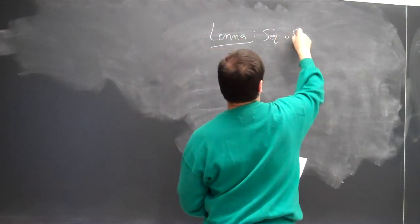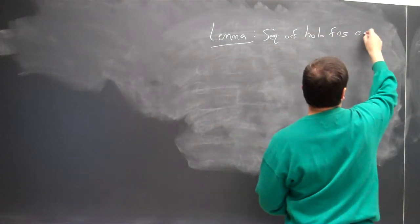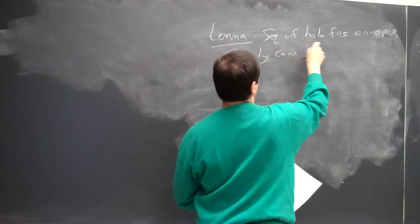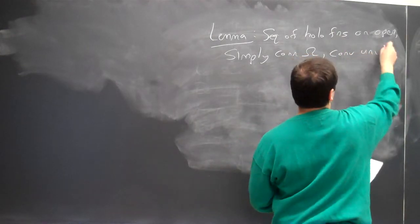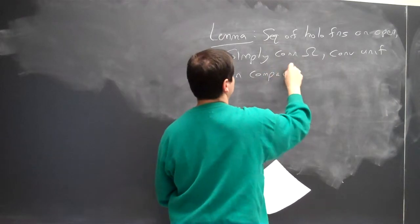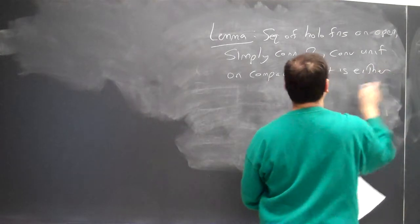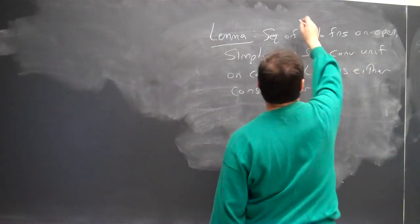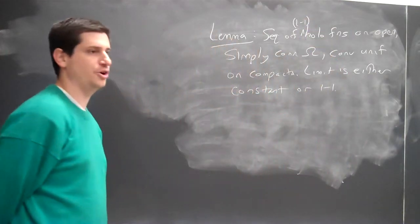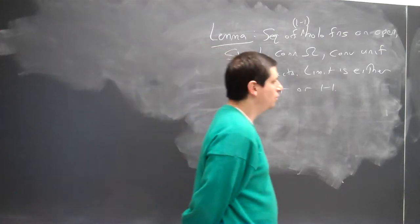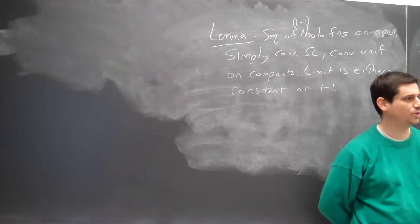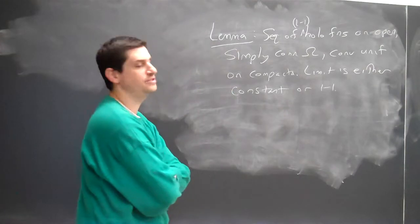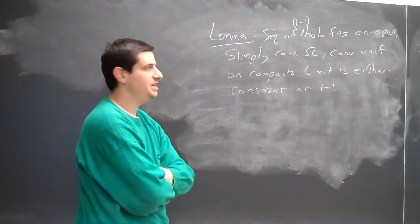It's a sequence of holomorphic functions on an open, simply connected omega. It converges uniformly on compacta. Limit is either constant or one-to-one. And I should say that the initial functions are also one-to-one. Give me a counterexample if my initial set of functions do not have to be one-to-one. Imagine I don't put in one-to-one. I want a sequence of holomorphic functions that converge uniformly on compacta, and their limit is neither constant nor one-to-one.